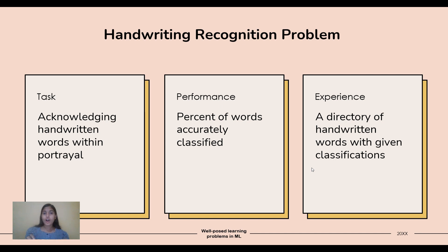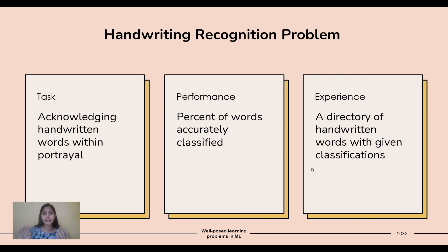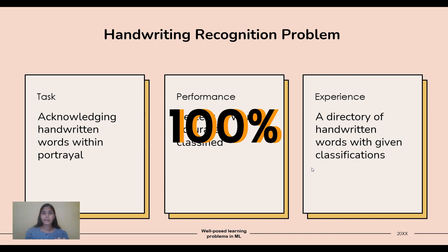For handwriting recognition, the experience is a directory of handwritten words with given classifications. For example, if I write 'Neha' on paper and scan it, the model's output should match the expected output 'Neha.' It matches its output with the expected output, and based on the percentage of matches, its performance is measured.